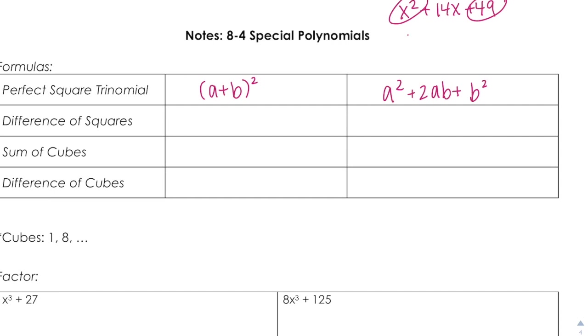Square root of X squared is X, square root of 49 is 7, X times 7 is 7X, times 2 is 14X, and there's a plus here, so I put a plus here. Parentheses squared. That's it.